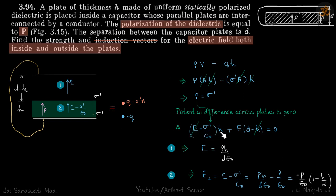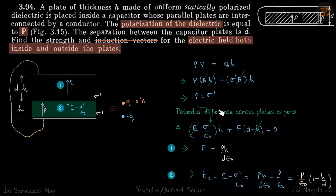From one plate to the other: (E minus σ'/ε₀)·H plus E·(D minus H) equals zero. Substituting σ' = P, we get E = PH / (D·ε₀). This is the field in the first region. In the second region (inside the dielectric), the field is E minus P/ε₀, and substituting our expression for E gives the final answer for the field inside the dielectric as well.